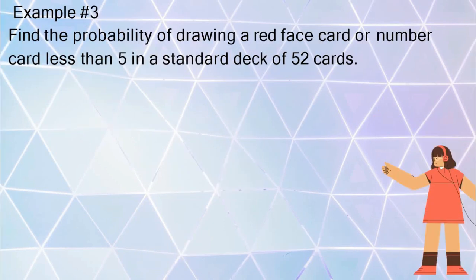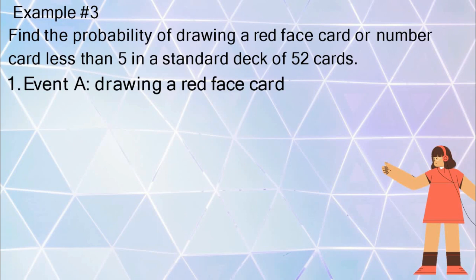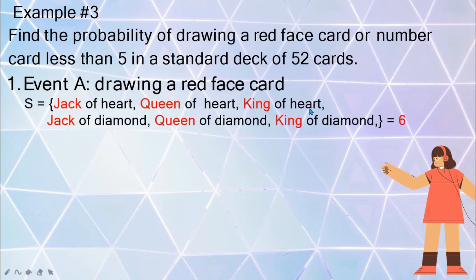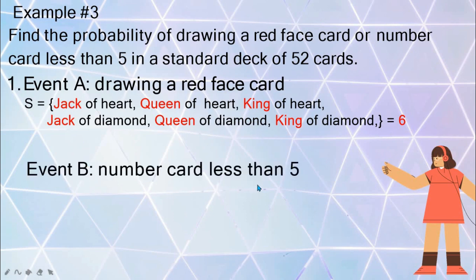Another example: find the probability of drawing a red face card or a number card less than five in a standard deck of 52 cards. For event A, drawing a red face card — we have two red suits, diamonds and hearts, and face cards are jack, queen, and king. The sample space is jack, queen, king of hearts and jack, queen, king of diamonds — 6 elements. For event B, number cards less than five are 2, 3, 4 across four suits.